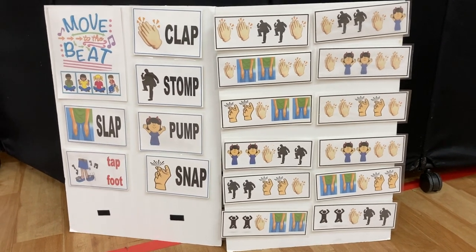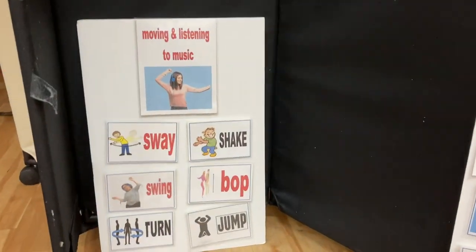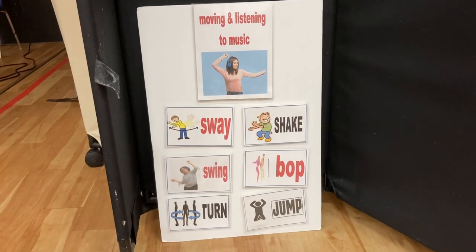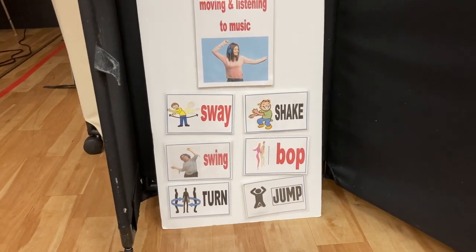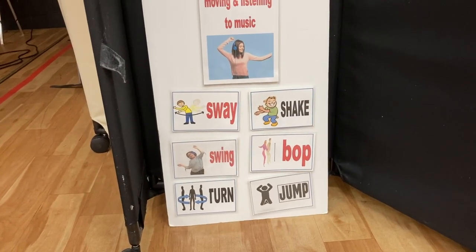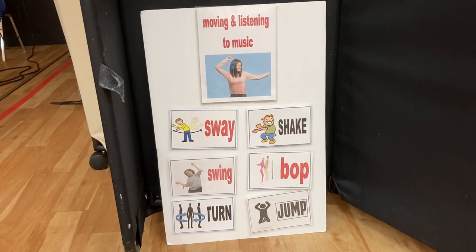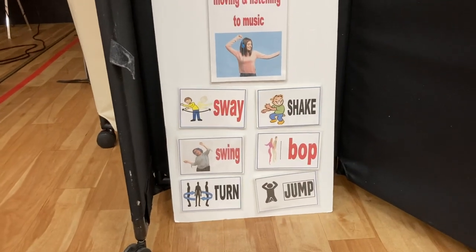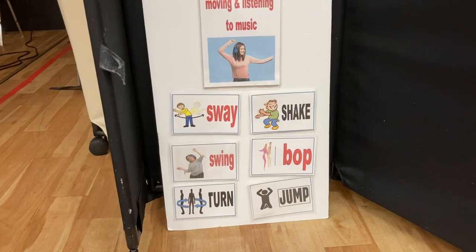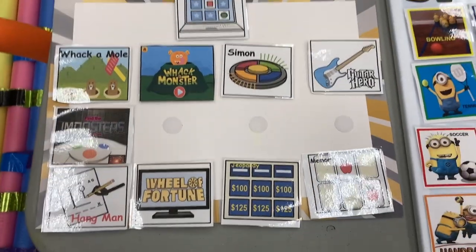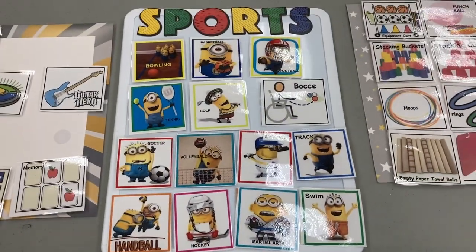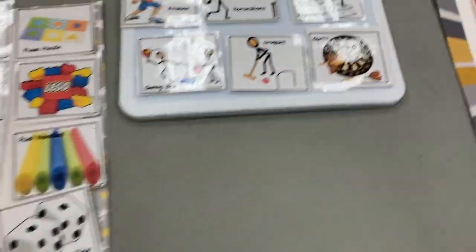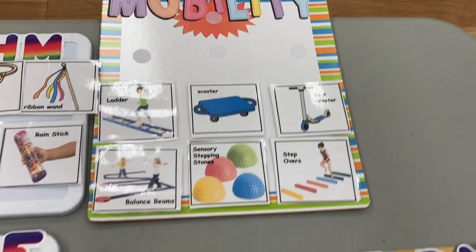Students get used to these visuals and we put them together to learn choreography. I'll take a card with the music and beat, and assign movements: student one has a sway, student two a shake, student three a bop, student four a swing, student five a turn, student six a jump. We sequence them — sway, shake, swing — and put them to a four or eight count. We also have our sports and fitness board with equipment, and categories including lifetime fitness, rhythm, mobility, and nutrition.